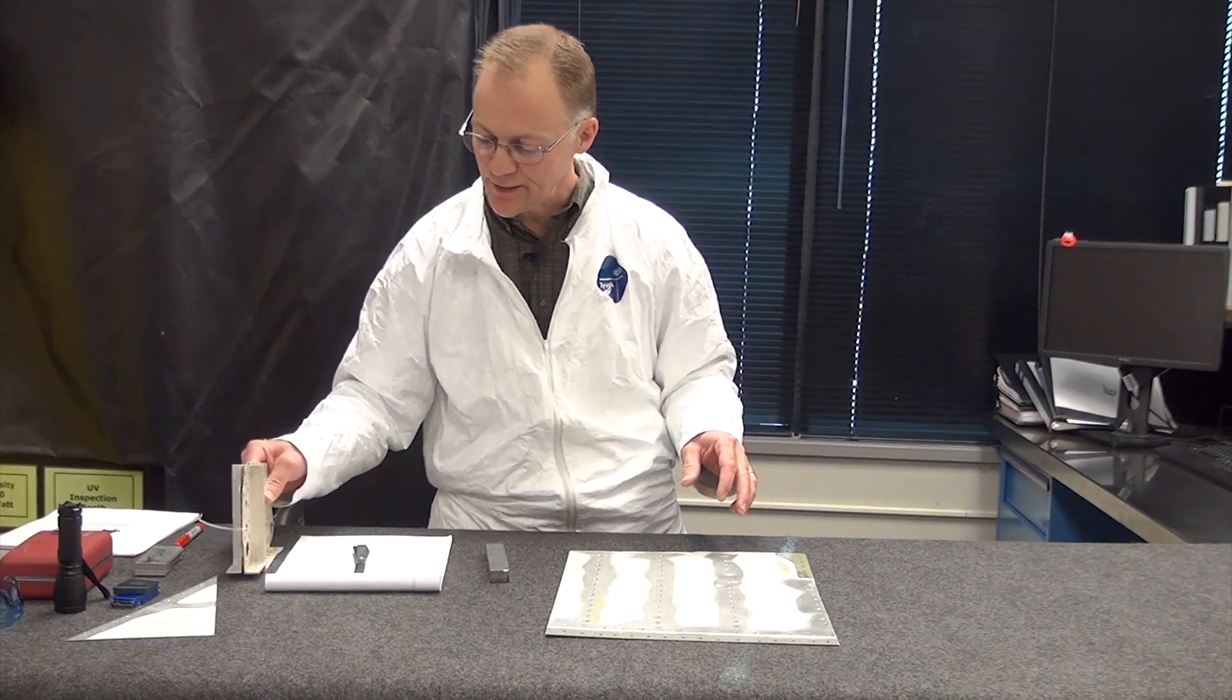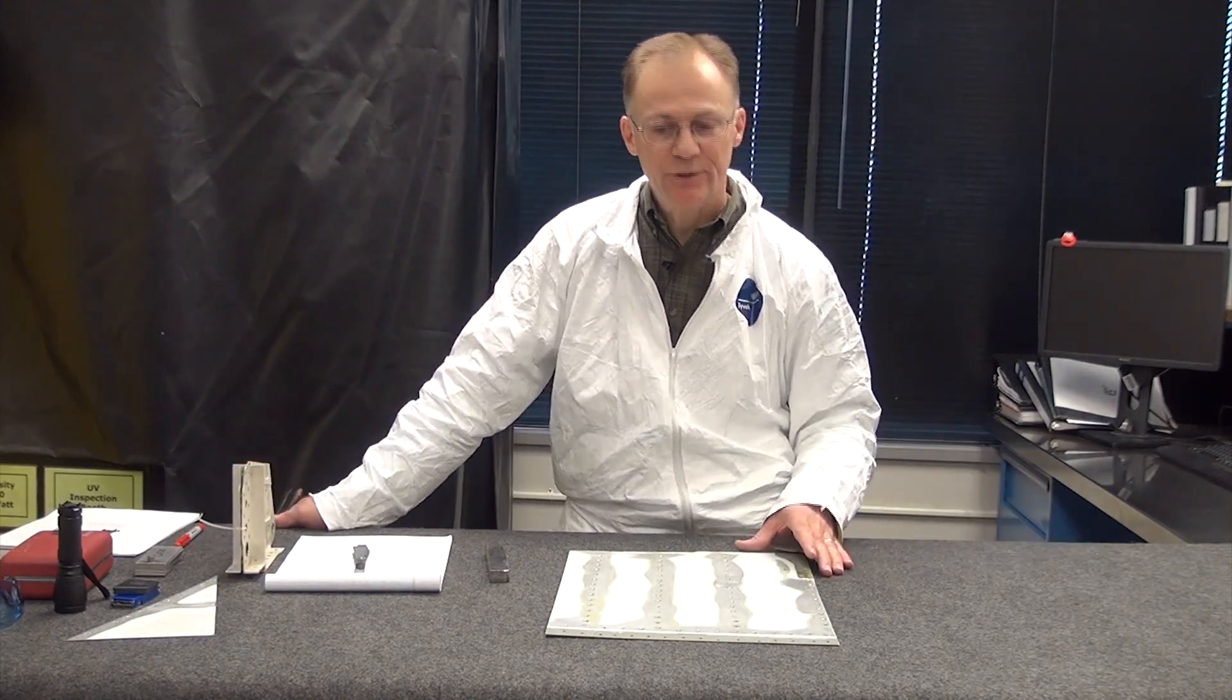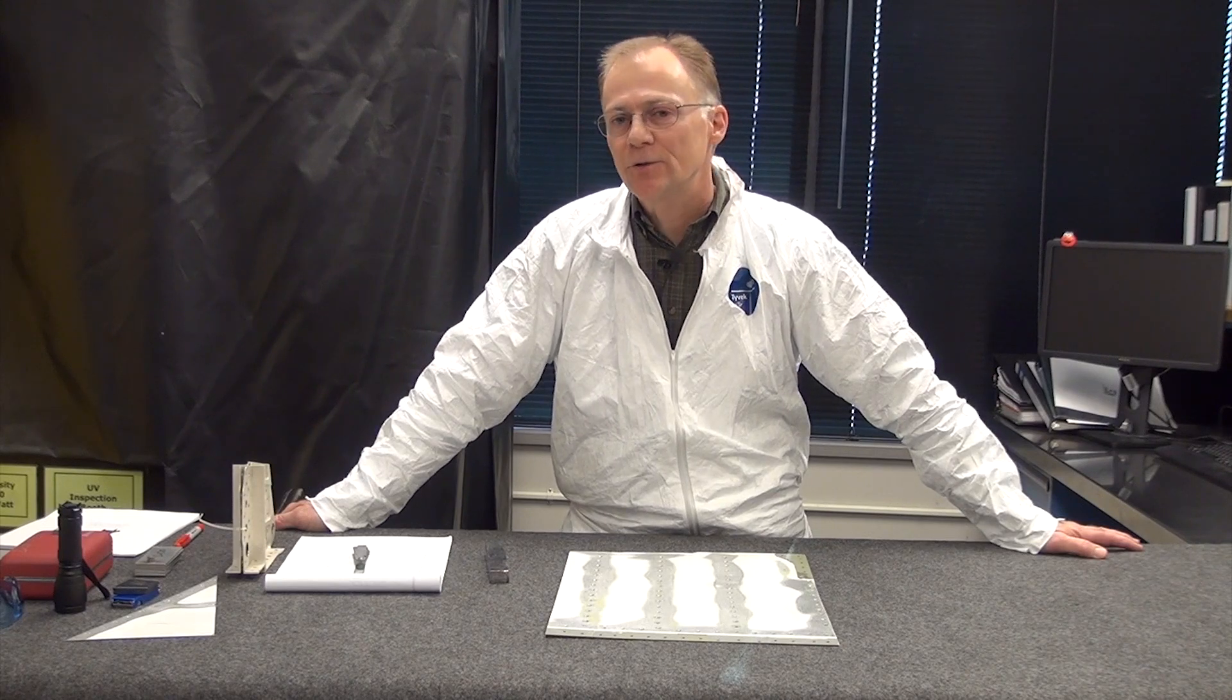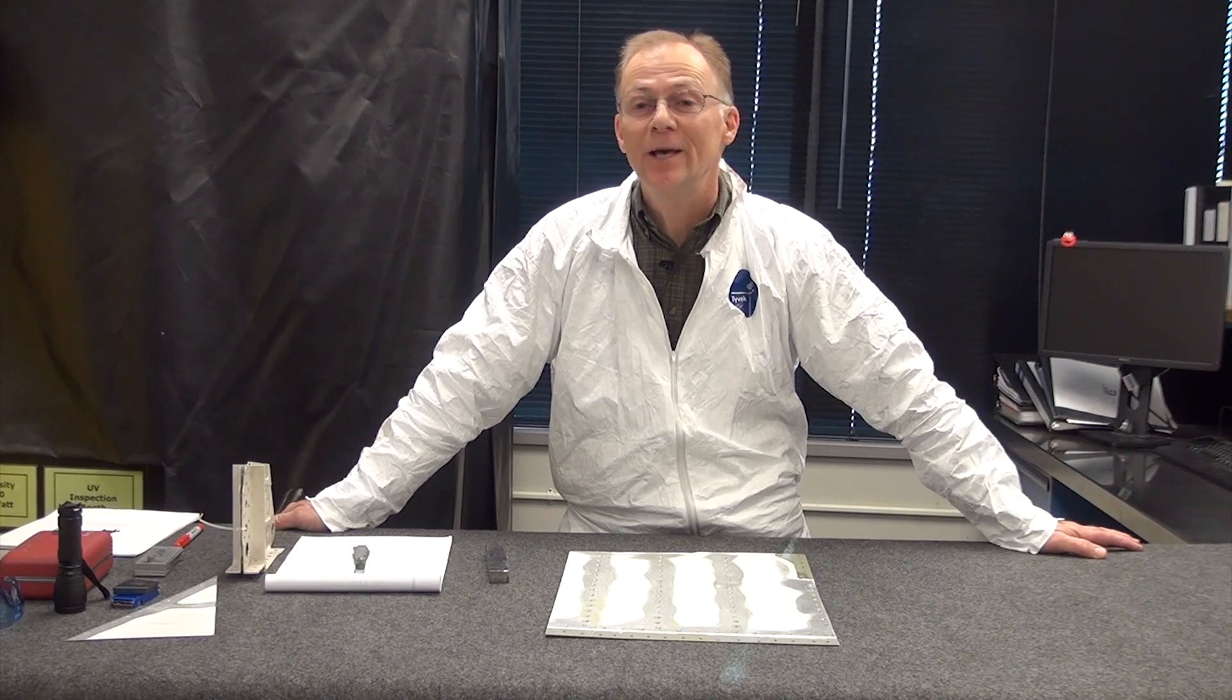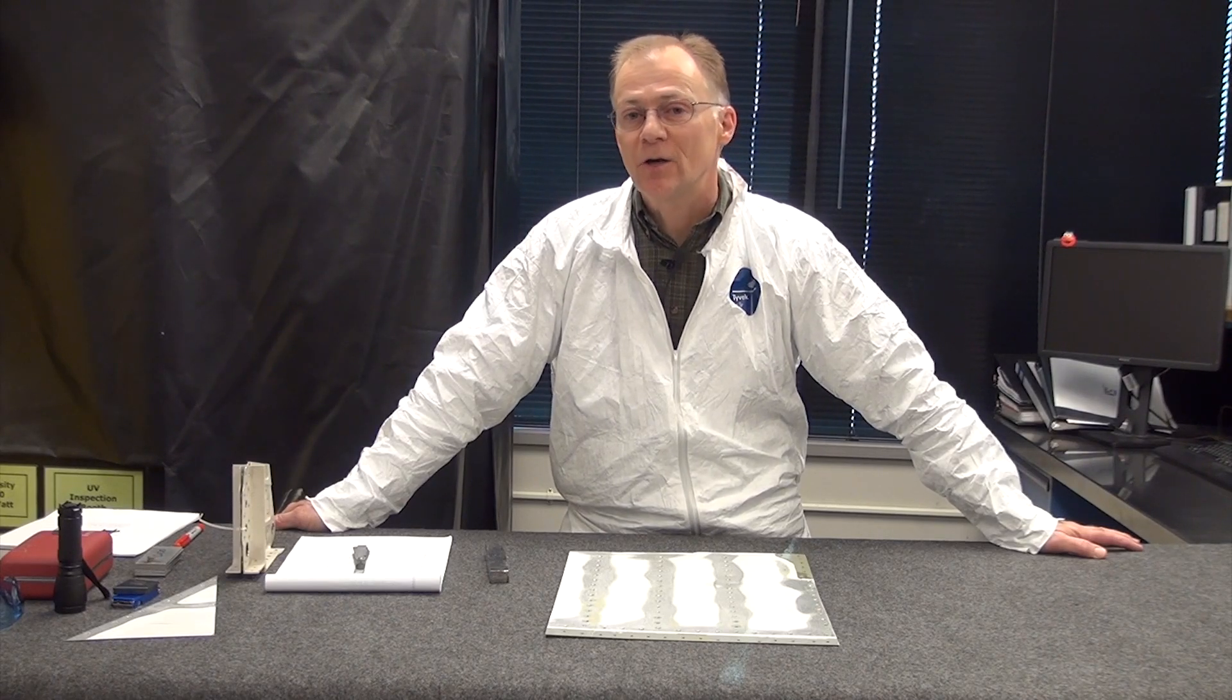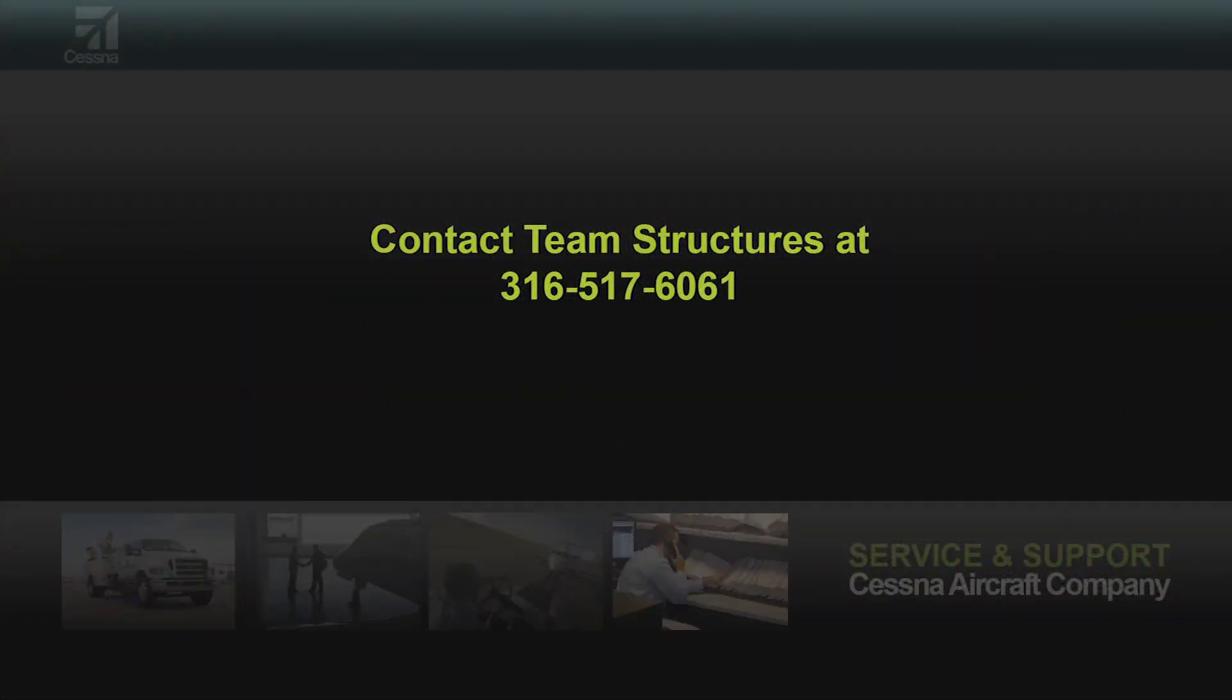Well, that's it for feeler gauges. We appreciate your taking a look at this video. Anytime you have any kind of structural concern for your Cessna aircraft from 120 through 750, we are glad to help you in the Cessna Structures Group. Give us a call at 316-517-6061. Thank you.